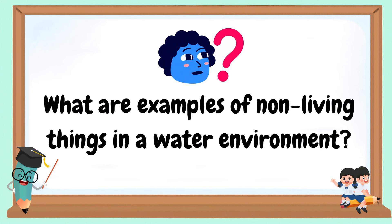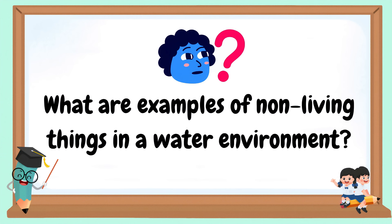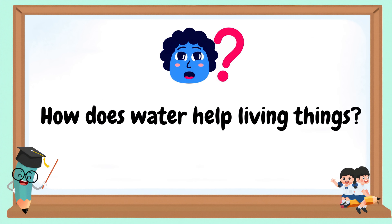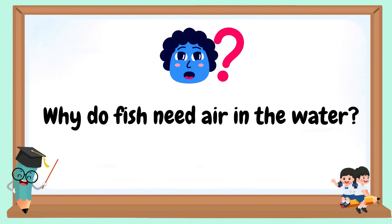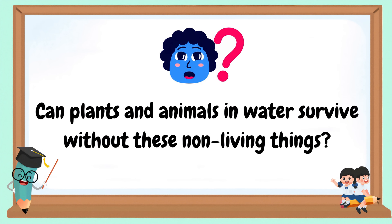What are examples of non-living things in a water environment? How does water help living things? Why do fish need air in the water? Why are rocks and sand important? Can plants and animals in water survive without these non-living things?